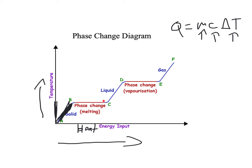As you continue adding heat, the temperature of the liquid rises again following Q = mcΔT. Eventually you get the phase change of vaporization — it boils. As it boils, you're adding more and more heat but the temperature is not changing, because you're breaking the bonds of the liquid and converting it into a gas. Once you've completely vaporized the liquid and converted it all into a gas, as you add more heat, the temperature of the gas increases. If you understand this phase change diagram, you basically understand most of what we've covered in this part of the lecture.